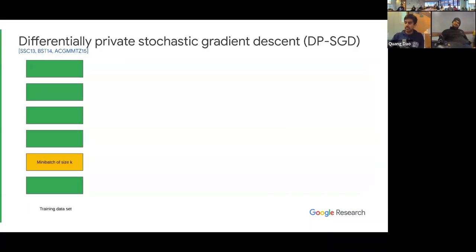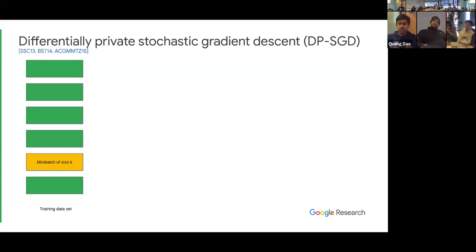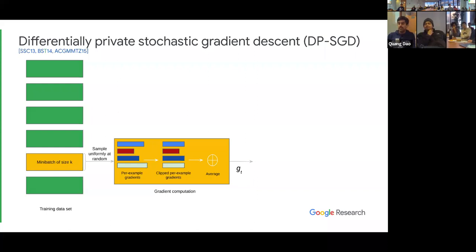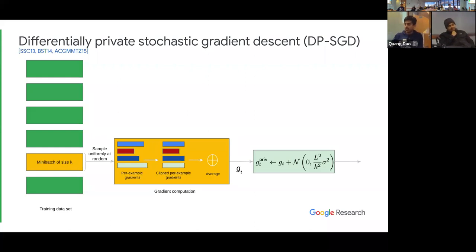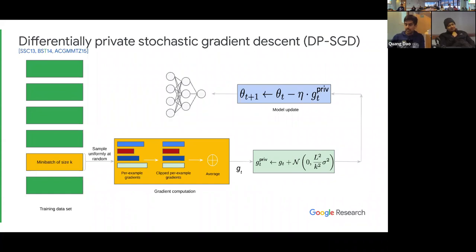DPSGD is the most naive version of differential privacy you can think of if you take an SGD algorithm. This algorithm has been developed over roughly three papers — Song et al., then a paper of mine with Ray Bassily and Adam Smith, and Abadi et al. in 2015. The idea is: you have a dataset, take a mini-batch of size k sampled uniformly at random, then do the following: clip the gradient of each sample to bound the influence of that sample, average it, add some Gaussian noise, and make a state update. If the Gaussian noise were not there, this is just SGD.